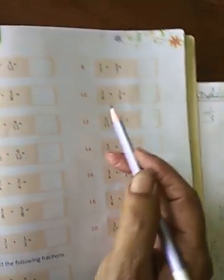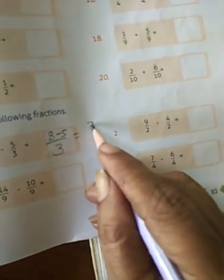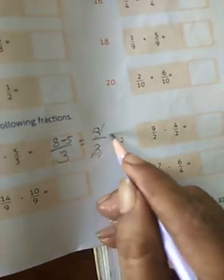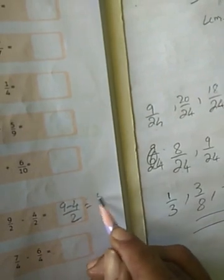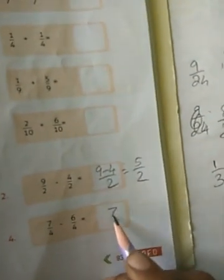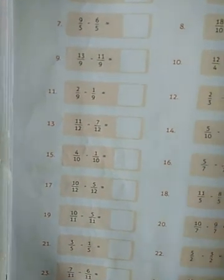Here denominator are same only. It is easy to add — they don't have different denominators. Ok children. In subtraction also same children. That is numerator 8 minus 5 when denominator are same. Ok. 8 minus 5 is 3 by 3 — that is 3 ones are, 3 ones are, that is 1. Here 9: so 14 minus 10 is how much children? 14 minus 10 is 4 by 9. Here 9 minus 4 by 2: 9 minus 4 is 5 by 2. Then 7 minus 6 by 4: that is 7 minus 6 is 1 by 4.